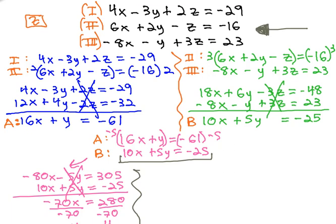In part one of this video, we started solving the system of equations: 4x minus 3y plus 2z equals negative 29, 6x plus 2y minus z equals negative 16, and negative 8x minus y plus 3z equals 23.